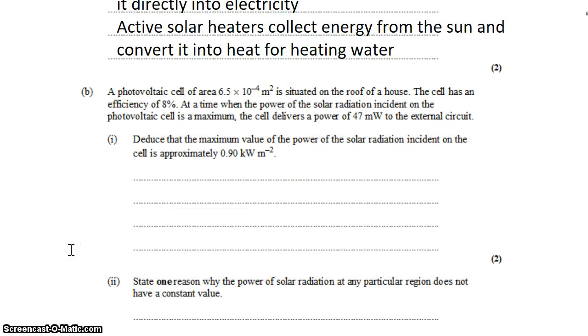We have a photovoltaic cell with a given area situated on the roof of a house. The cell has an efficiency of 8%, which is pretty poor nowadays, but I guess when this was written that might have been current. At the time when the power of the solar radiation incident on the photovoltaic cell is at a maximum, the cell delivers a power of 47 milliwatts. Well, we're talking about quite a small cell with poor efficiency, so not a lot of power.